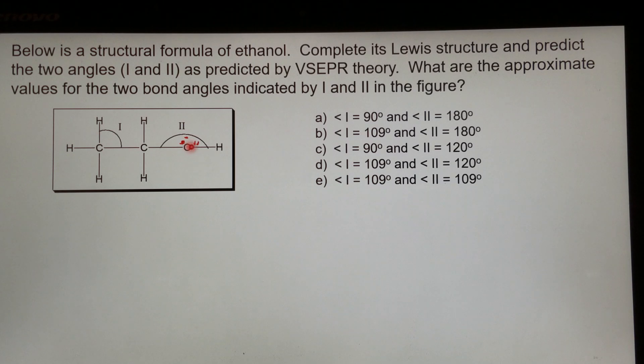So now I added the two lone pairs on oxygen, surrounding this oxygen, there are two lone pairs plus two bonding pairs. That's total of four electron groups. Then the electron geometry here is tetrahedral.